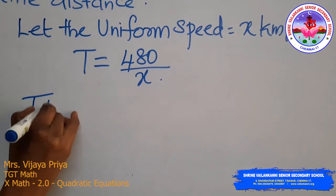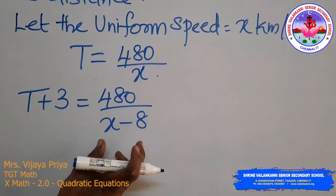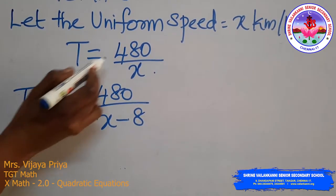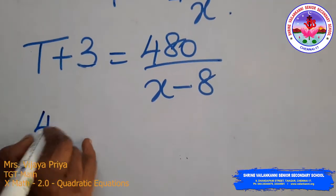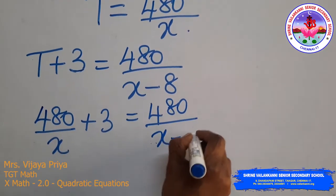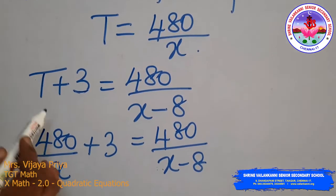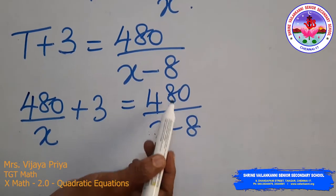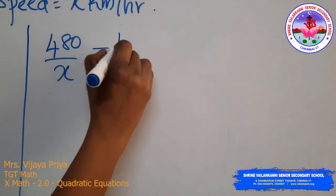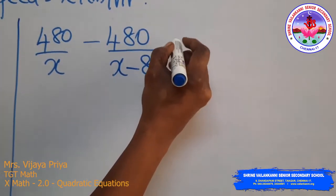So the new time at reduced speed equals (480/x) + 3, and this equals 480/(x − 8). Rearranging: 480/x − 480/(x − 8) = −3. Taking 480 as common: 480[1/x − 1/(x − 8)] = −3.